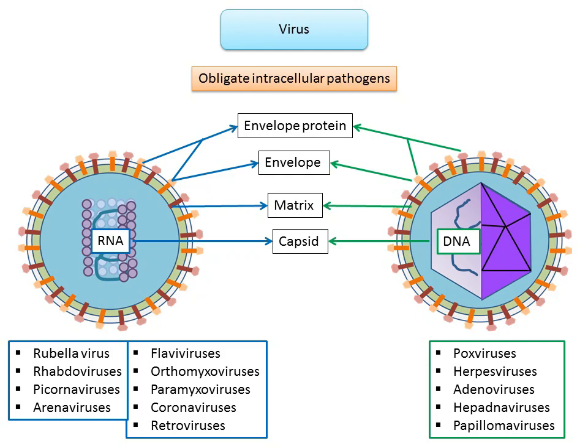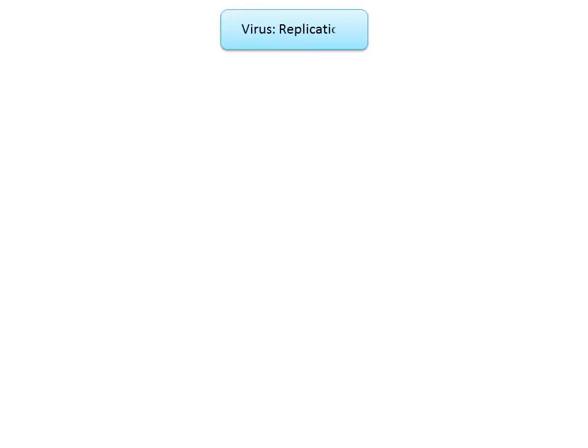The discovery of novel antiviral inhibitors is often linked to a better understanding of the molecular events in viral replication. Let's take a look at viral replication for DNA and RNA viruses respectively, starting with an example of a DNA virus — herpes simplex.